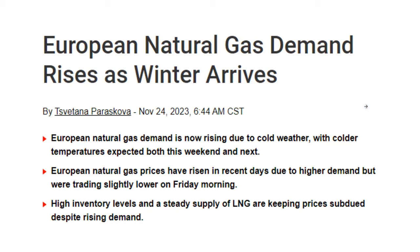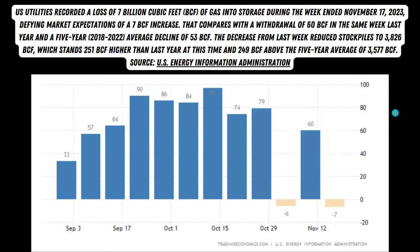European natural gas demand rises as winter arrives — this is something they've been mentioning for a while and something I've been keeping you guys up on since spring. In the US, we saw a sharp decline in natural gas recently. US utilities recorded a loss of 7 billion cubic feet of gas into storage during the week ended November 17th, 2023, defying market expectations of a 7 billion cubic feet increase. That compares with a withdrawal of 60 billion cubic feet the same week last year and a five-year average decline of 53 billion cubic feet, reducing stockpiles to 3,826 — standing 251 above last year and 249 above the five-year average.